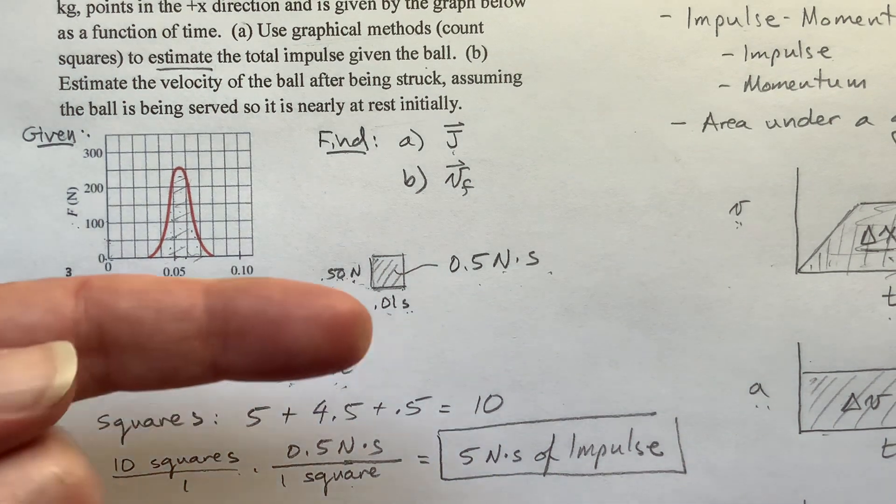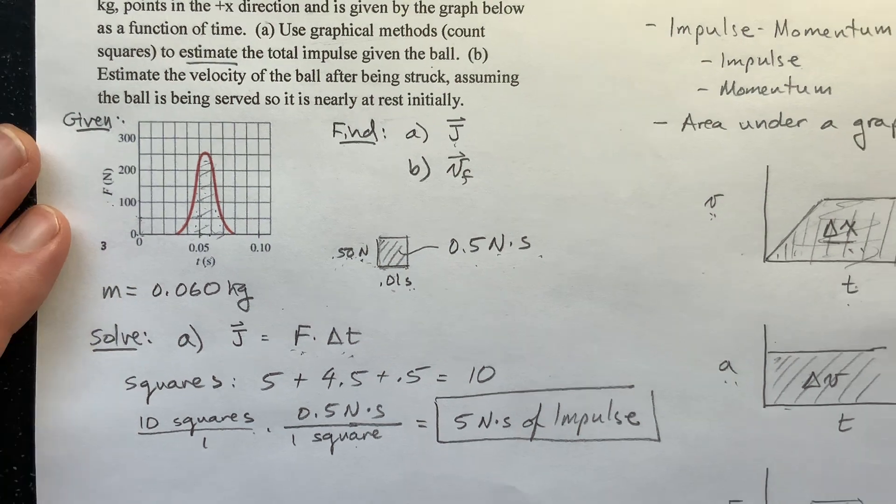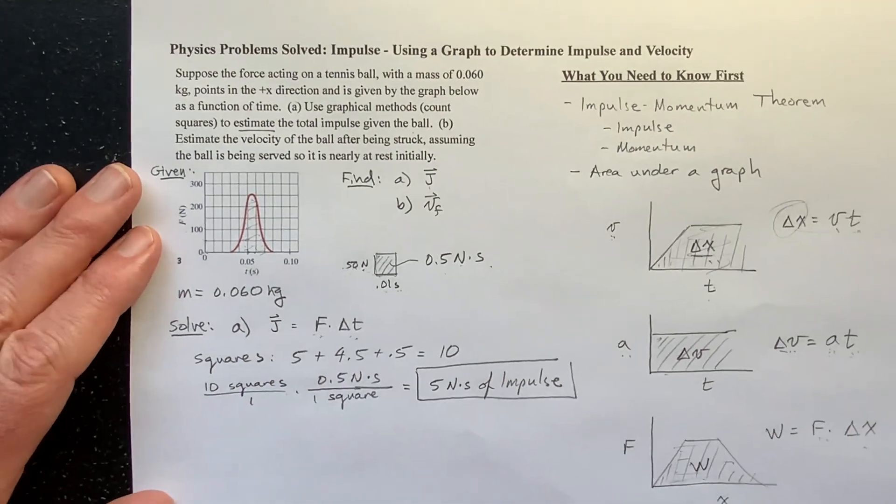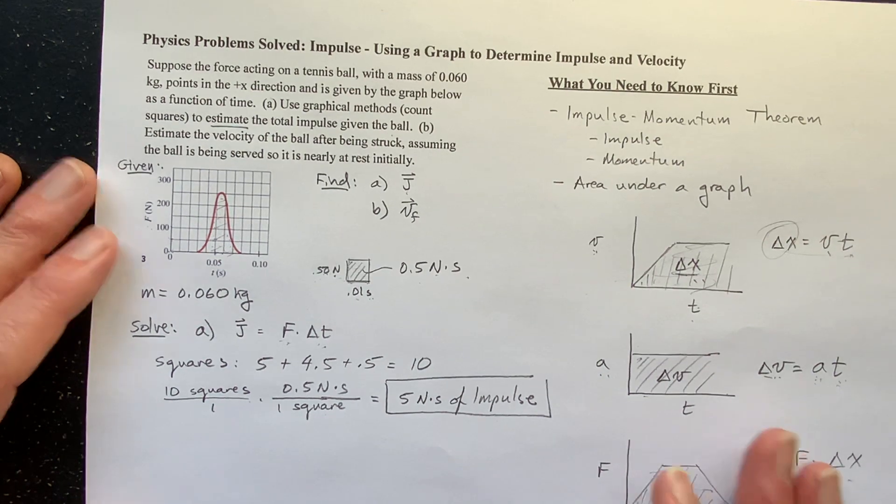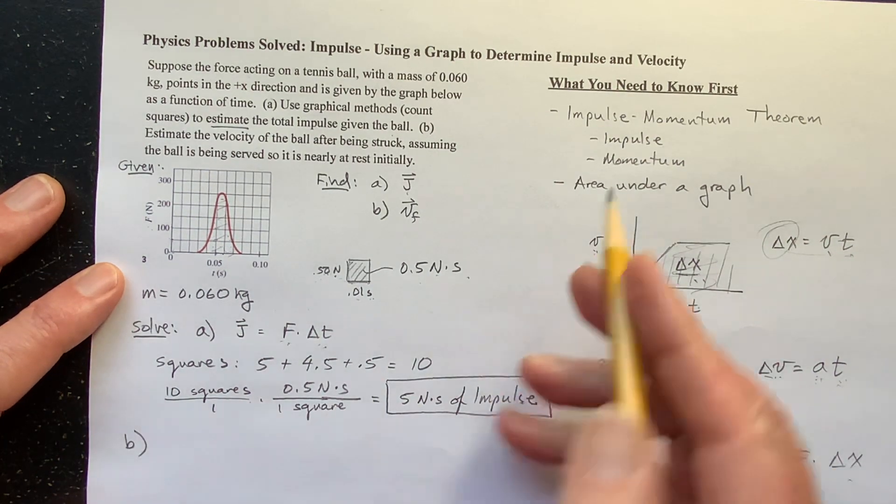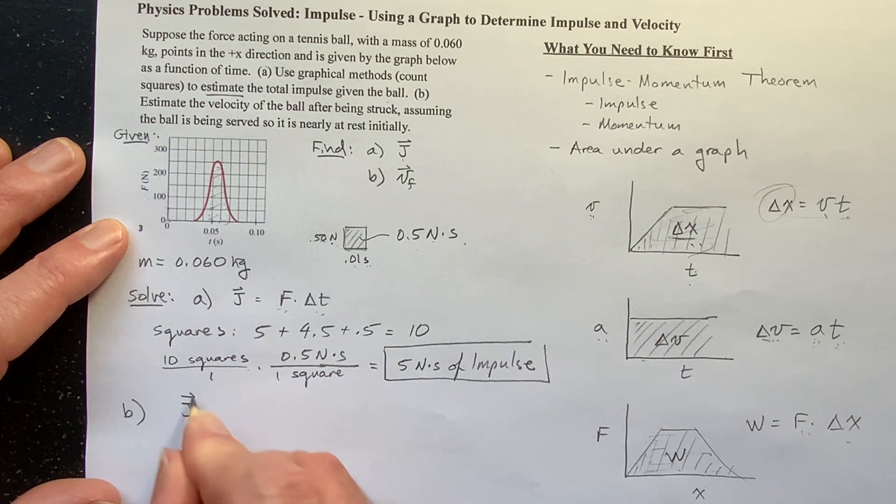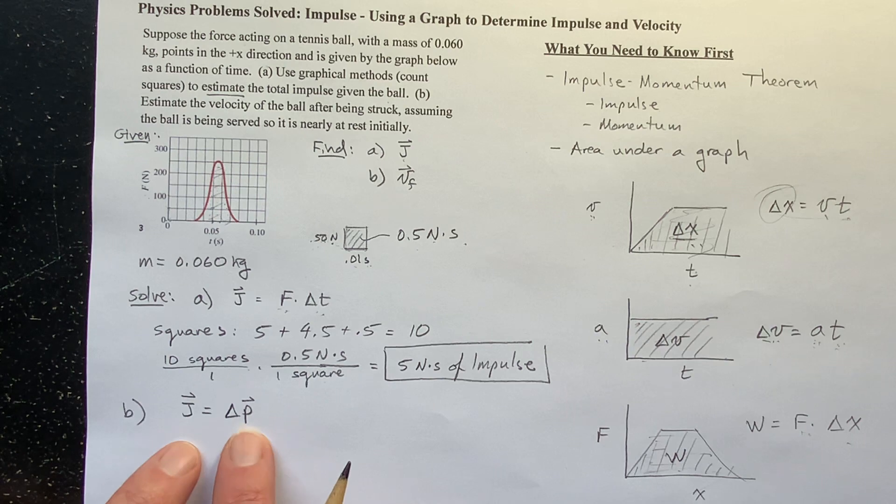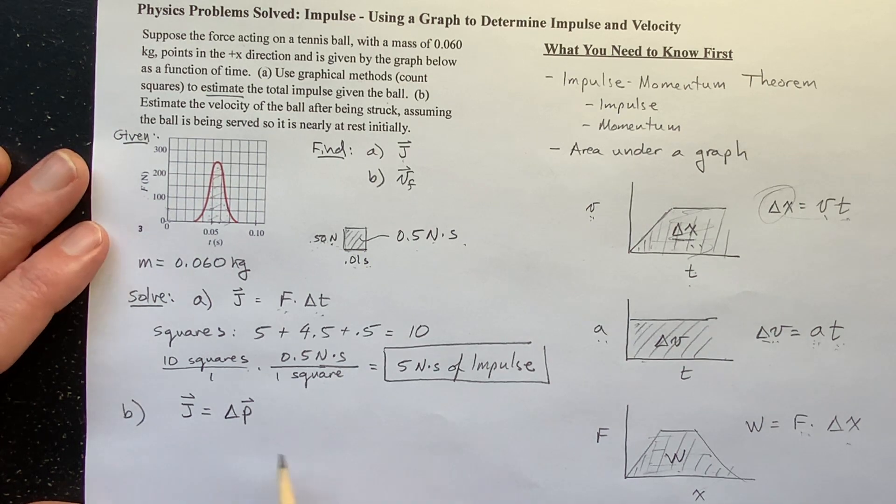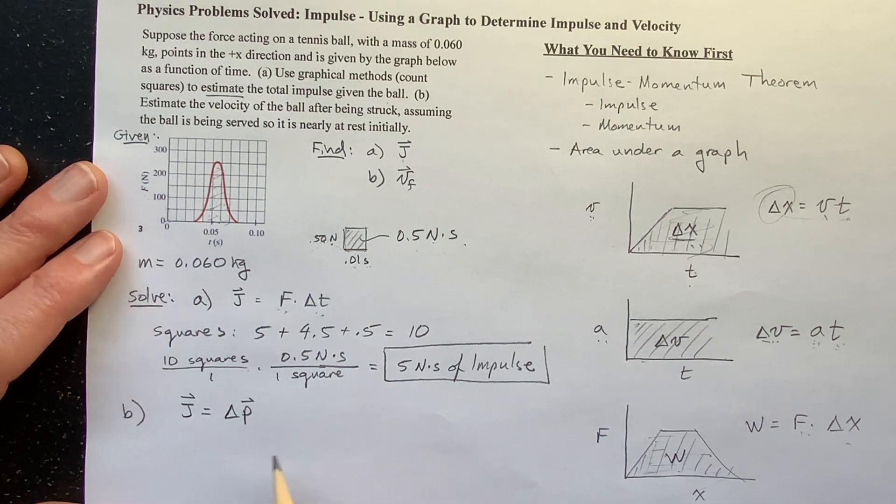So let's do part B. And now we're going to use the impulse momentum theorem. And the impulse momentum theorem says this: the impulse on an object is equal to the change in momentum of an object. You need to know that. It's a fairly simple thing to show why it's true. I have videos that do that and so do a thousand other people on YouTube. But the impulse momentum theorem is that if you provide an impulse to an object, that will be equal to the change in momentum of that object.